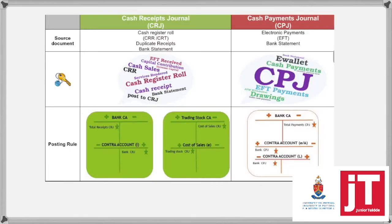We also need to refresh our memories in terms of each journal — what is the source document, what are the keywords for each journal, and what is the posting rule. In your theory booklet you will see this table. For the CRJ, our source documents are cash register roll, duplicate receipts, or bank statements. We work with cash sales or cash receipts, posting to capital contribution, rent income, and all of those. The general rule is to debit bank and credit the contra accounts, with the exception of the stock account and cost of sales. We record cost of sales in the CRJ because we want to know what the profit is compared to the sales of the day.